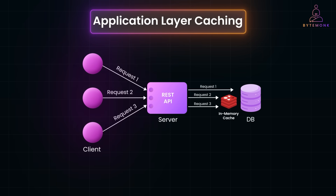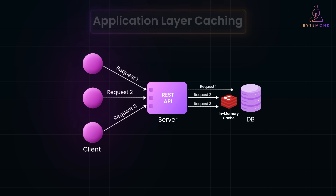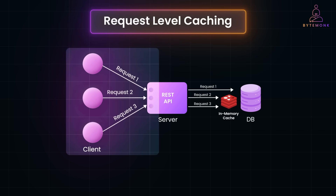Application layer caching happens deeper within the application logic, often focusing on specific data or computation results rather than entire responses. Request-level caching is all about caching entire API responses for specific requests. It's tied to individual API calls and is typically implemented based on unique request parameters, such as query strings or request headers. This approach is especially useful for read-heavy operations like GET requests, where the data doesn't change frequently.